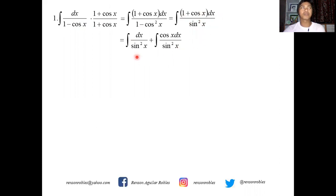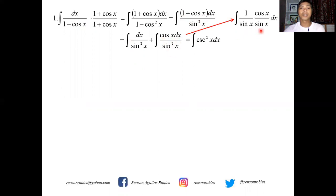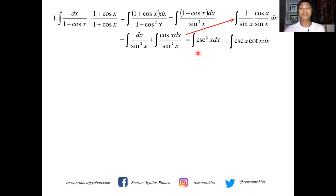We know that 1 over sine is cosecant, so the integral of dx over sine squared x equals the integral of cosecant squared x dx. For the second part, cosine x over sine squared x equals cotangent x times cosecant x, giving us the integral of cosecant x cotangent x dx. We now have straightforward integration formulas for both.